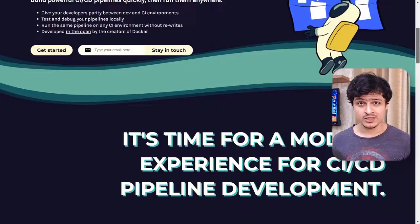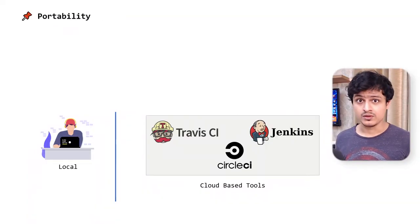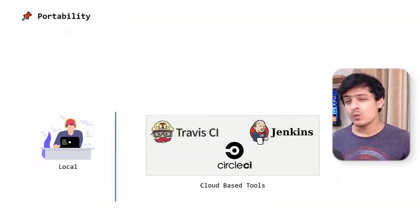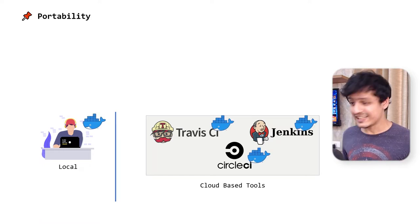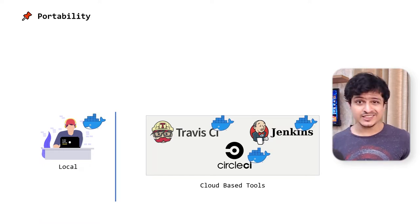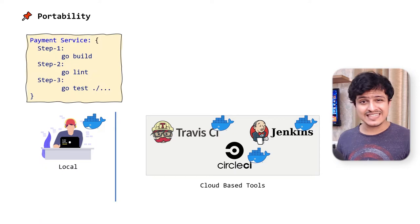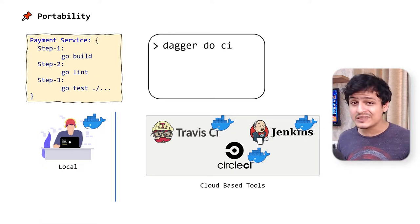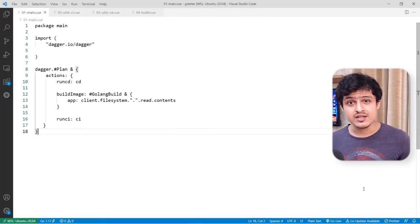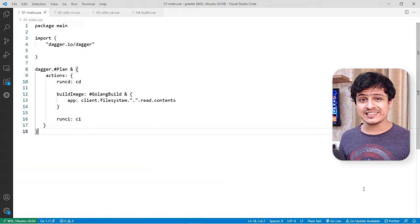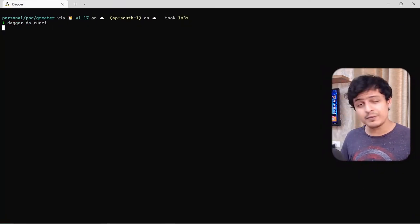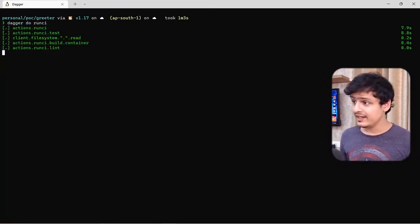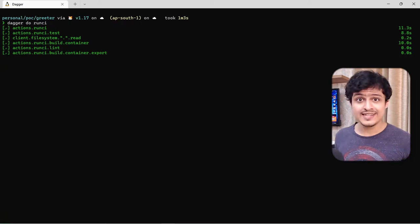Let's break this down. Let's start with portable. Dagger can pretty much run anywhere — well, anywhere as long as you have Docker installed. The idea is pretty ingenious actually. Pipelines written in Dagger can be executed directly using its CLI. The best part is you can run the CLI command on your local machine or as a step in your favorite CI/CD tool. It's really that simple.